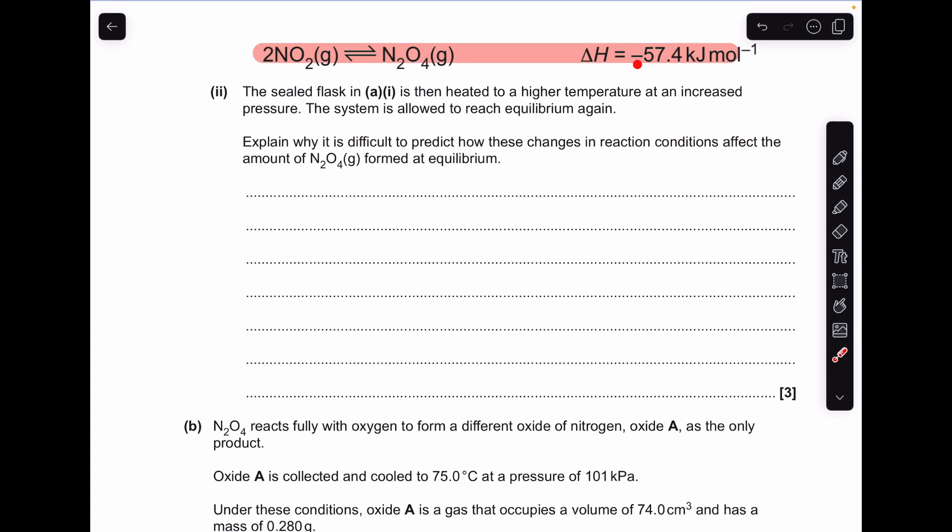Well, you can see the forward reaction is exothermic because of that negative delta H. And so a higher temperature is going to actually favour the reverse reaction and send the equilibrium over to the left. Obviously it's going to drop the amount of N2O4 produced.